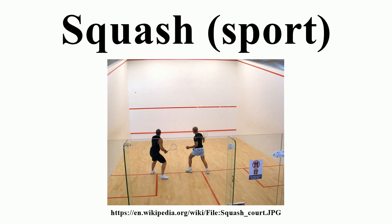A key strategy in squash is known as dominating the tee. Skilled players will return a shot and then move back toward the tee before playing the next shot. From this position, the player can quickly access any part of the court to retrieve the opponent's next shot with a minimum of movement. A common strategy is to hit the ball straight up the side walls to the back corners — the basic squash shot referred to as a rail, straight drive, wall, or length. After hitting this shot, the player moves to the center of the court near the tee. Attacking with soft or short shots to the front corners causes the opponent to cover more of the court and may result in an outright winner.